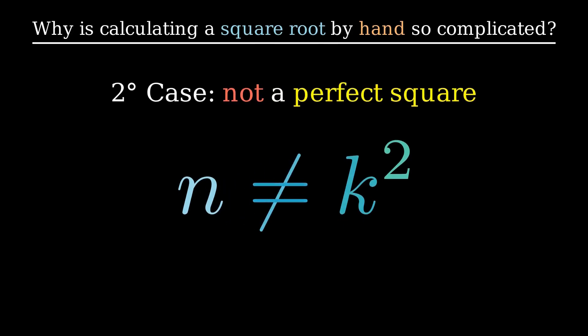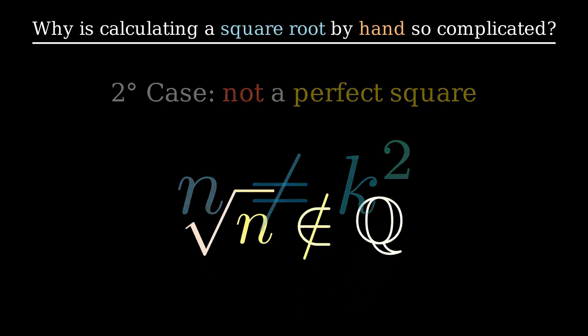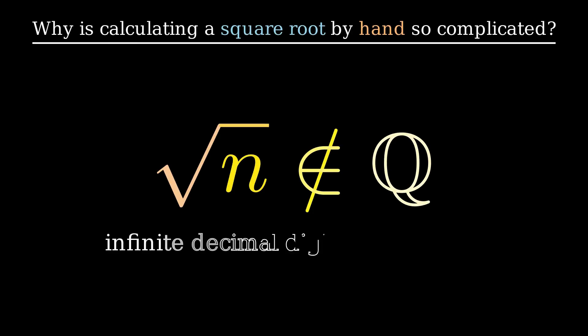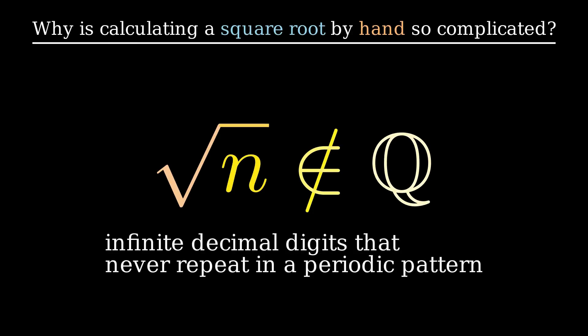Second case, n is not a perfect square. Here the problem begins. The square root of n is an irrational number, meaning it cannot be written as a fraction. It has infinite decimal digits that never repeat in a periodic pattern. This means we can never calculate it exactly. We can only approximate it with more or less precision.